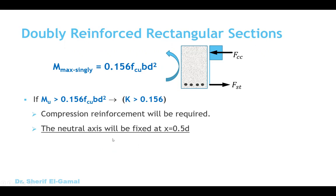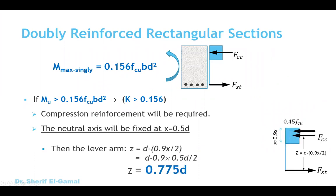According to the code, we fix x (the distance from the compression face to the neutral axis) equal to 0.5d. Since S = 0.9x, replacing x with 0.5d gives z = d − (0.9x / 2). Substituting x = 0.5d, we get z = 0.775d. So in the design of doubly reinforced rectangular sections per the BS code, the lever arm z is a fixed value equal to 0.775d.